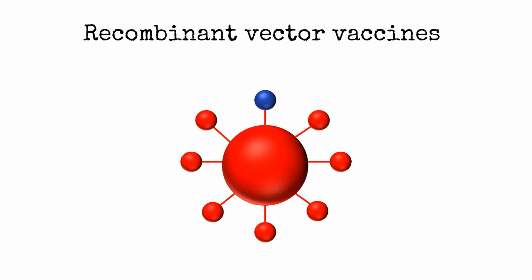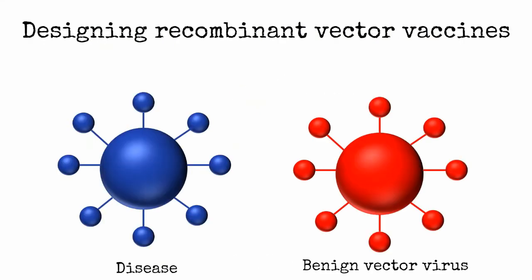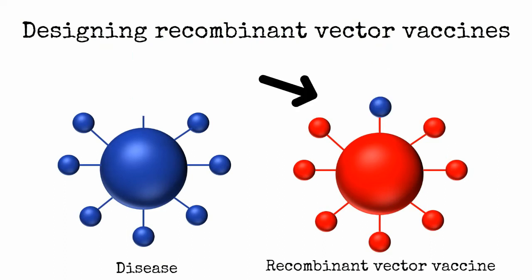The other main type of vaccine with the potential to transmit is a recombinant vector vaccine which combines two viral genomes. Here we focus on recombinant vector vaccines that engineer genes from wild type disease viruses into benign viruses. The benign virus is otherwise intact, so it serves as a vector for the transmission of the disease antigen.